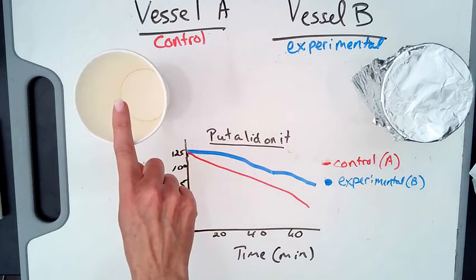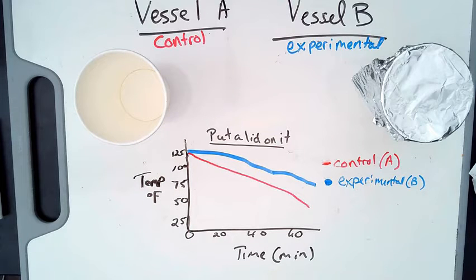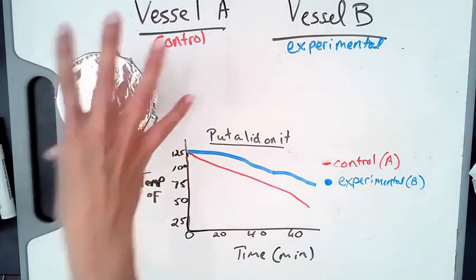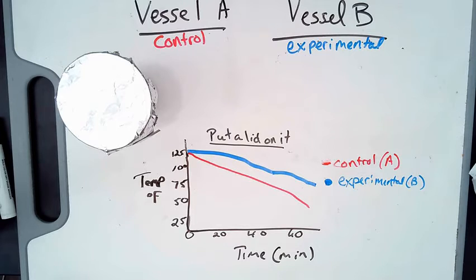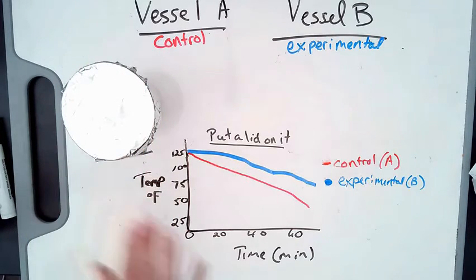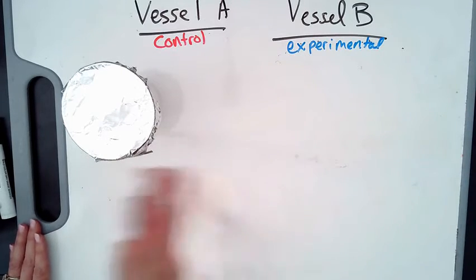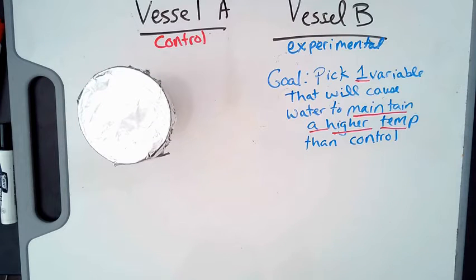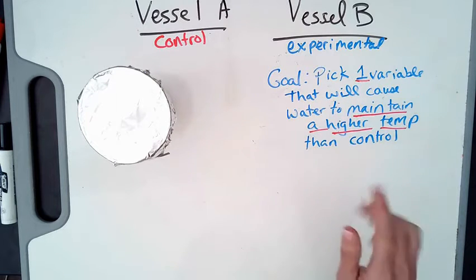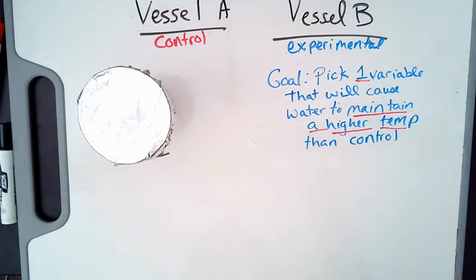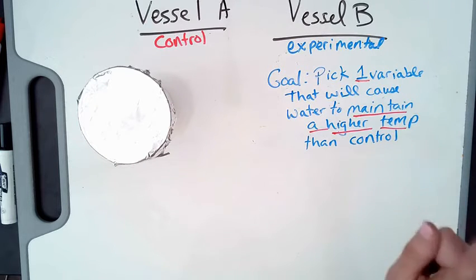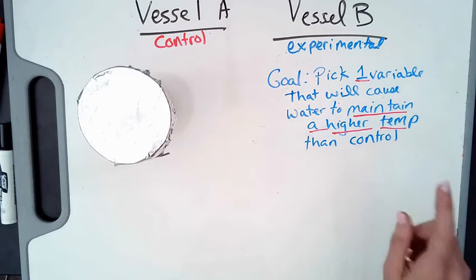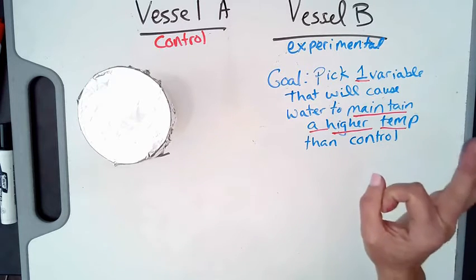Today you will choose your own variable. So the vessel with the lid that you used now becomes the control. So this is the control, and you will design the experimental vessel B. The key to a successful experimental design is to pick only one variable that's different from the control, and that one variable, that one change, causes the water in vessel B to maintain a higher temperature than the control.